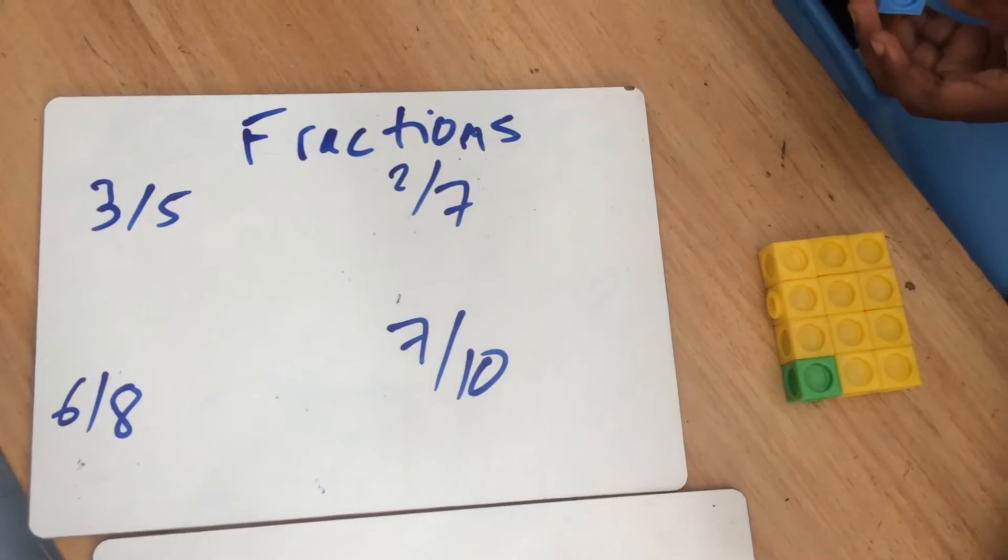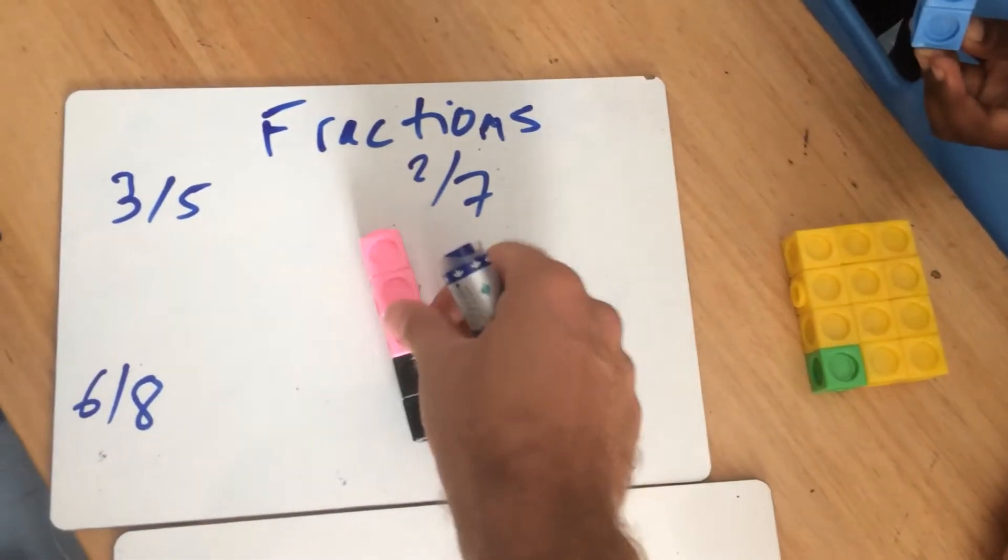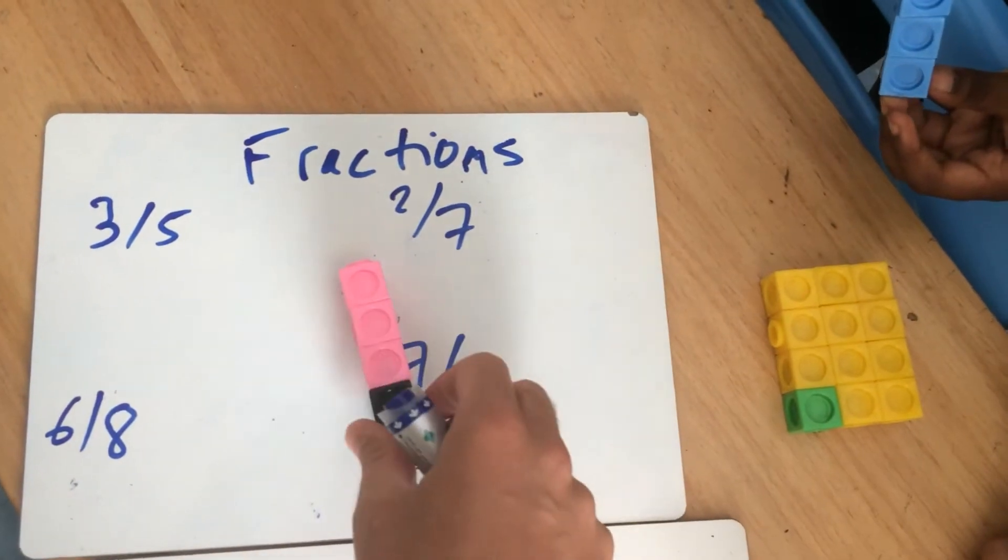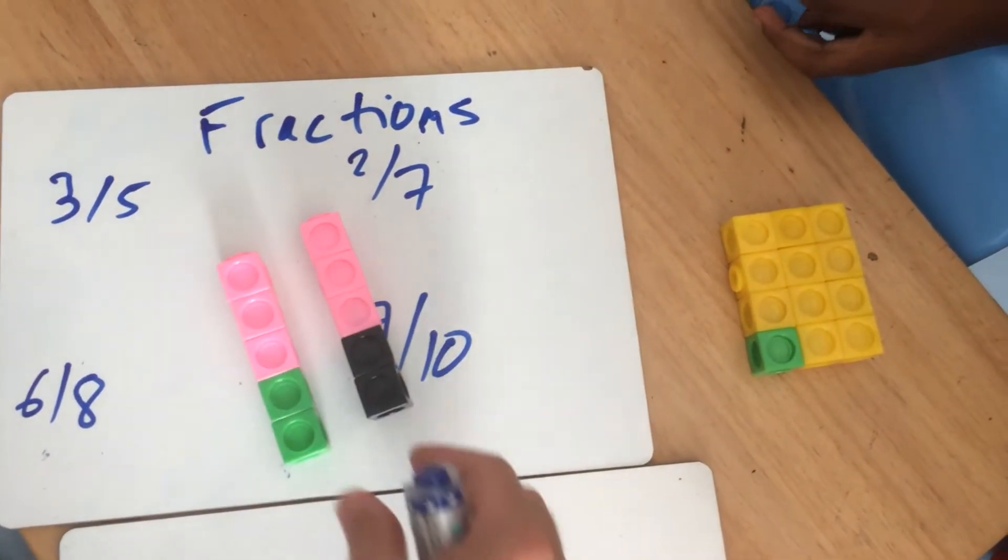I want to see three fifths. So there we go. That's three pink ones out of a total of five. Any others that are three fifths? That one there. Again, chosen pink. Fantastic.